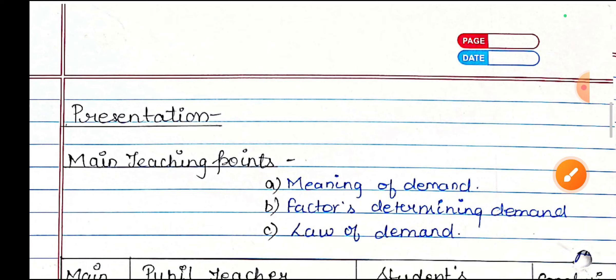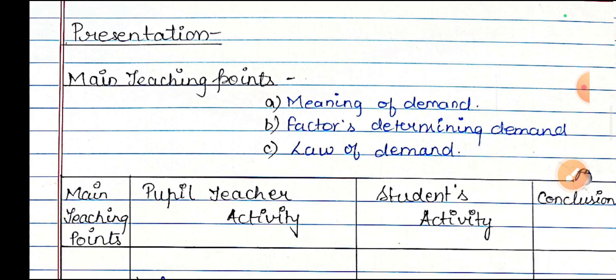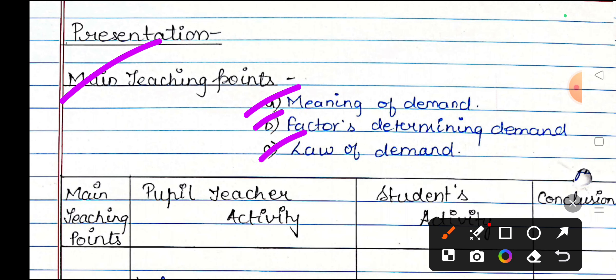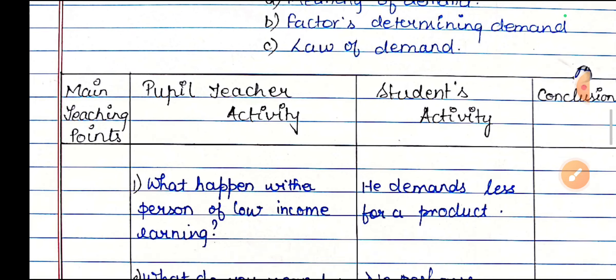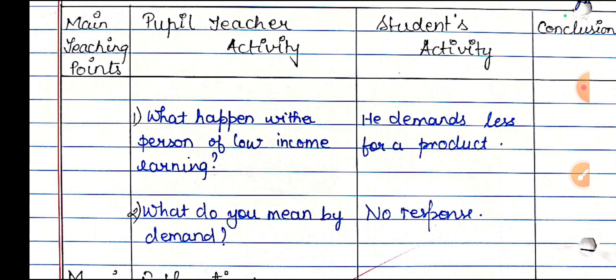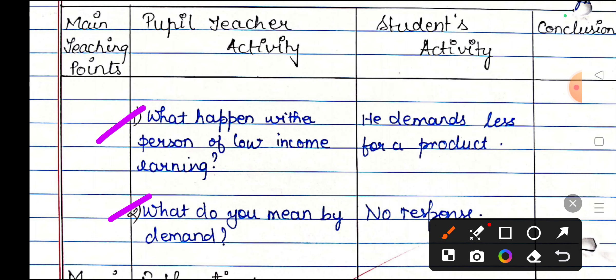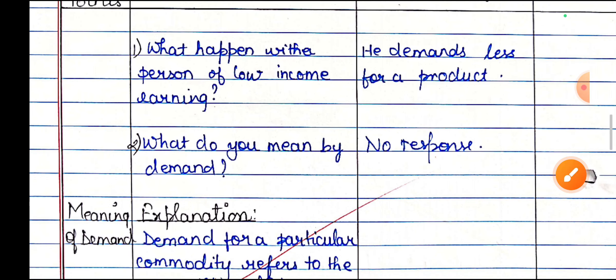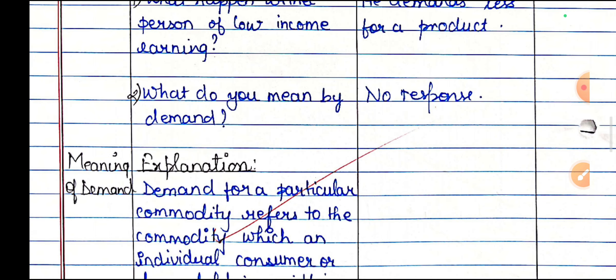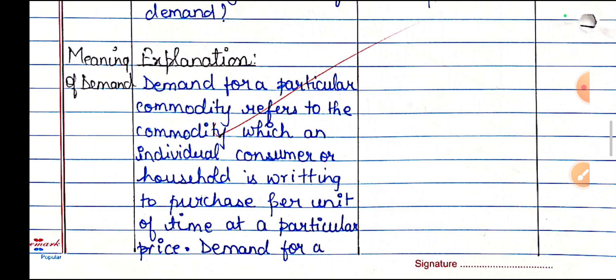Then there will be a presentation. The main teaching points are given. The third way to create column. This will be asked for developing questions. Two developing questions will be asked. After that, there will be an explanation. Meaning of demand. This explanation is given.